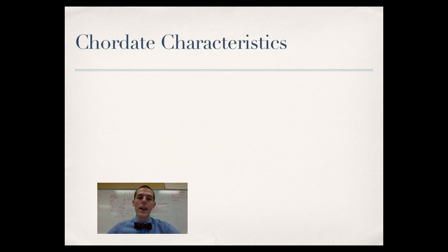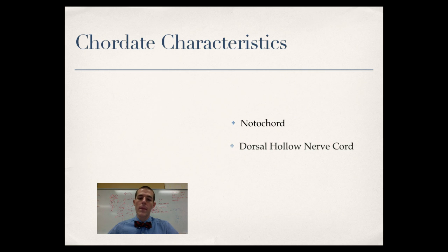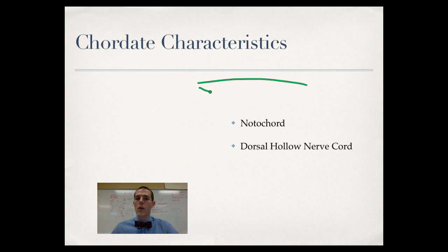We're going to start at the most basic level — the chordate. Chordates have a notochord, which is a chord running down the length of the back used for support, usually found in the embryo. There's also a dorsal hollow nerve cord, which will develop into the central nervous system, also found in the embryo. In a basic embryo diagram, the dorsal hollow nerve cord runs along the back and the notochord runs in between, used for support.